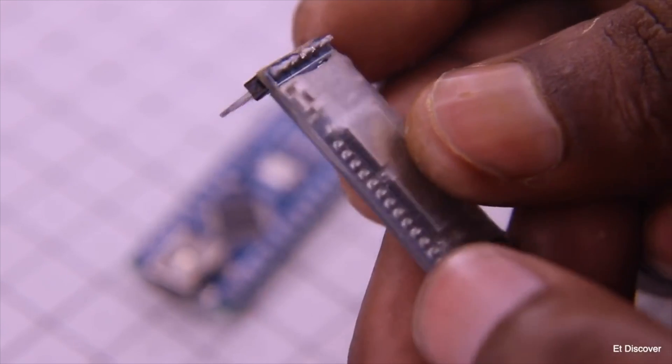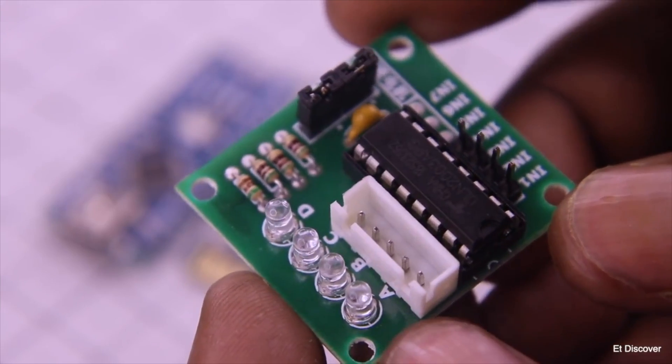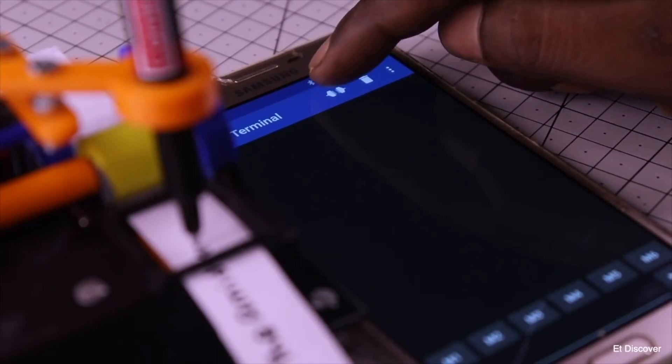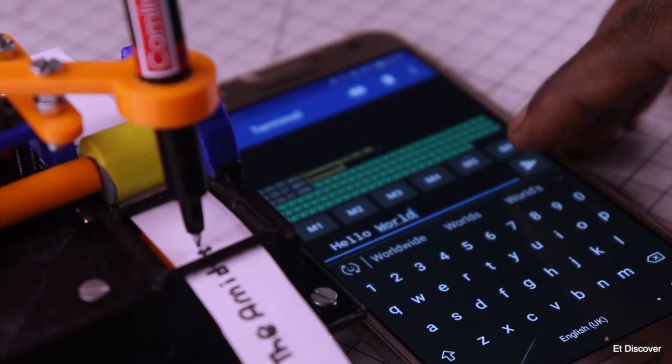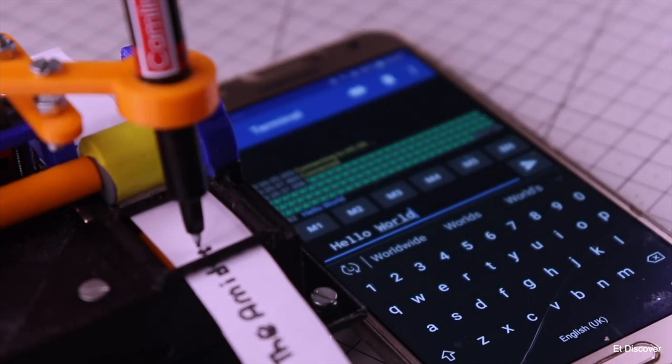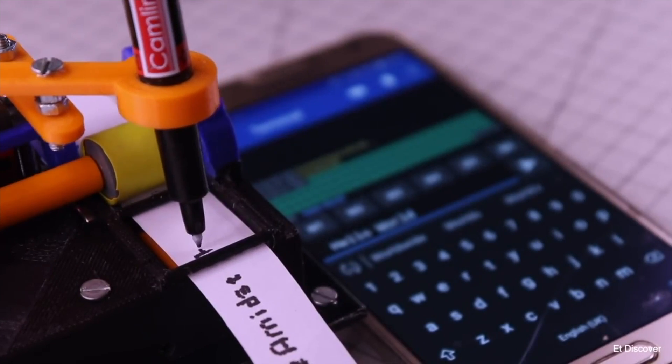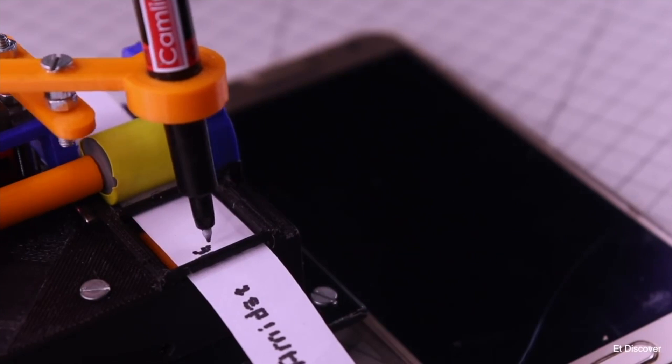I used HC05 for Bluetooth communication, and as a motor driver, I have used ULN 2003 IC. I downloaded a serial Bluetooth application to run via Bluetooth. Then I will connect my specific Bluetooth in this software. I'll type a message, hello world, and as soon as I send it, it starts printing on my printer. This printer is working very well.